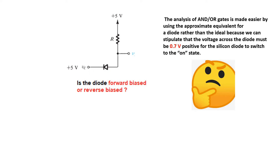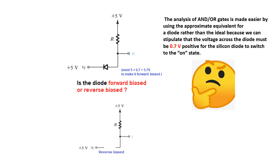So if it is not 5.7V, then it will not conduct. We need 5 plus 0.7V, so 5.7V to make this forward biased. And as it is now, we will say that the diode is reverse biased.